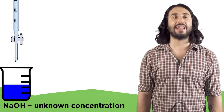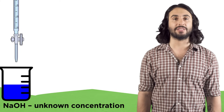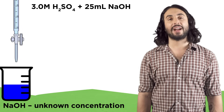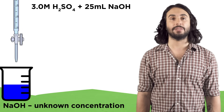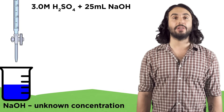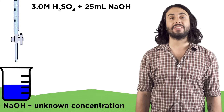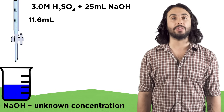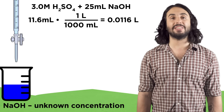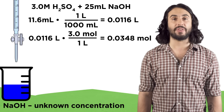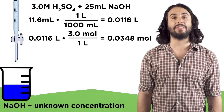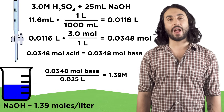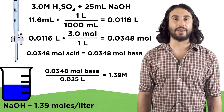For example, let's say there's a solution of sodium hydroxide and we want to know its concentration. Say we react 3 molar sulfuric acid with 25 milliliters of the base and we find that it takes 11.6 milliliters of acid to reach the equivalence point. If we convert to liters and then apply conversion factors for the concentration of the acid and the stoichiometric ratio, we can arrive at the concentration of the reactant.